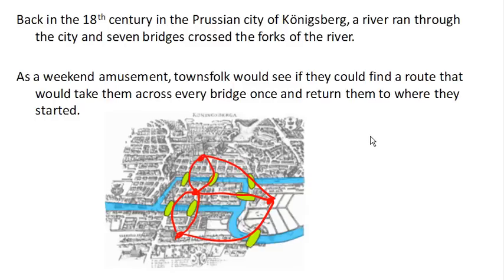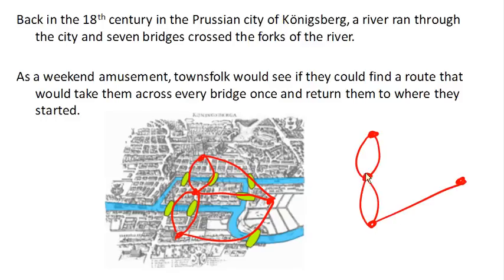Our graph ends up looking like — you can really see it over there, but in case you're having trouble, it looks like this. The question we could ask is: is it possible to find a route that would take them across every bridge once and return them to where they started? If we look at the degree of these vertices...